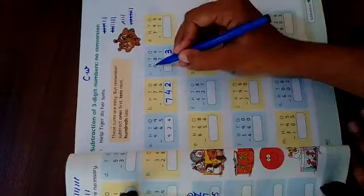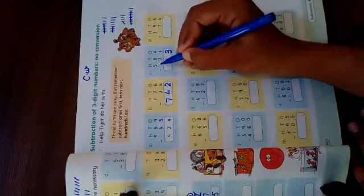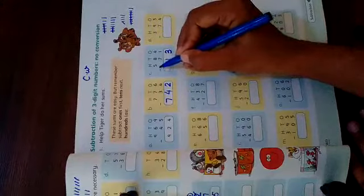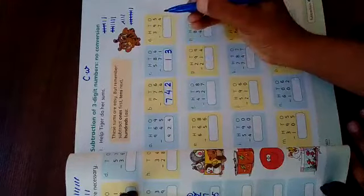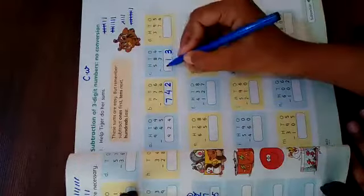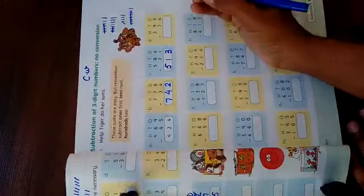Next is five. Five is not written down below. And I have told you that when nothing is written down, it means zero. Zero means nothing. Five minus zero. So the answer is five. We will write it down.